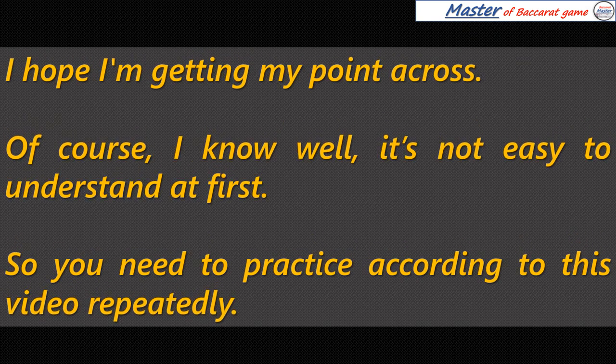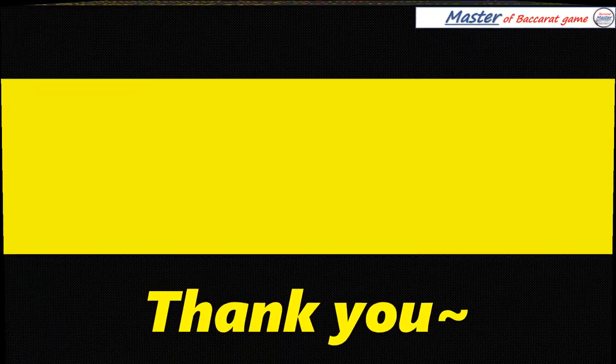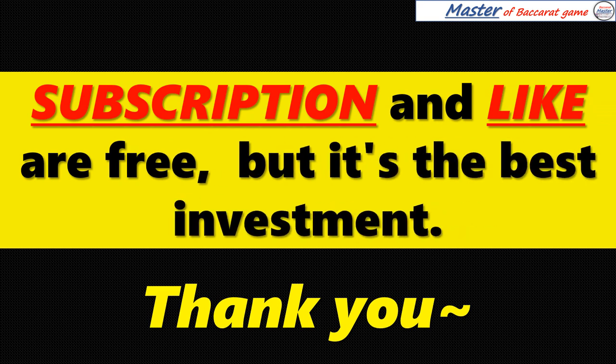I hope I'm getting my point across. I know it's not easy to understand at first, so you need to practice according to this video repeatedly. To summarize: stability means the maintenance of the flow, and chaos means the breaking of it. That's the key, and that is the way to play all derived roads out. Subscribe and like are free, but it's the best investment. Thank you.